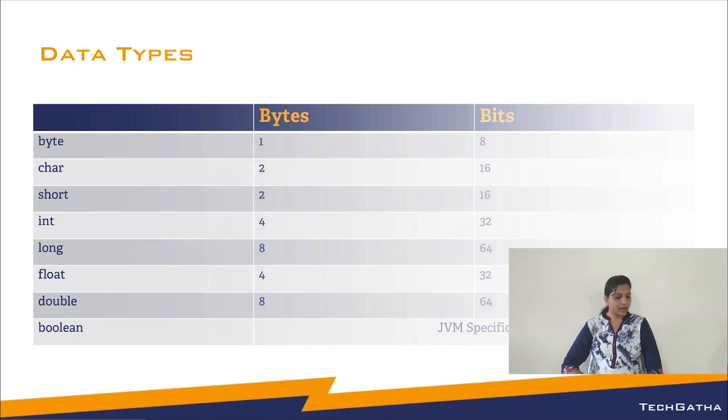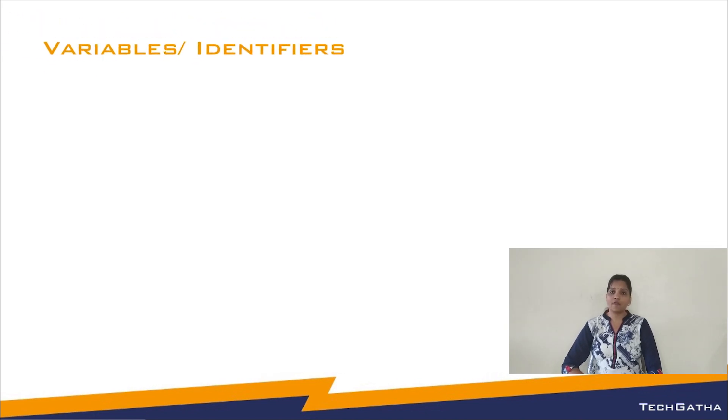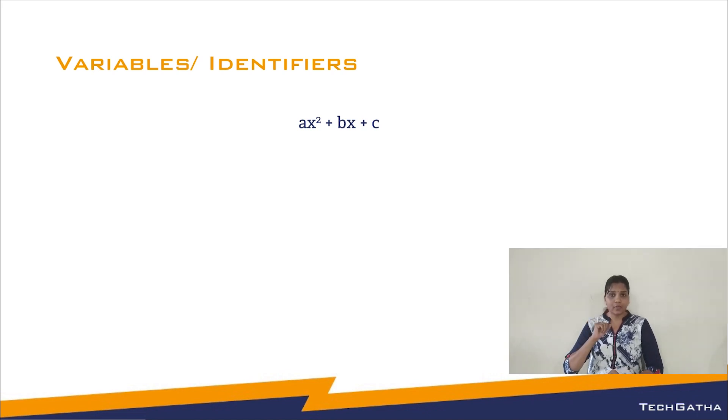The next token that comes up is variables. Now if you remember in maths, we have an expression ax square plus bx plus c. In this expression, a, b and c are constants whereas x is a variable.